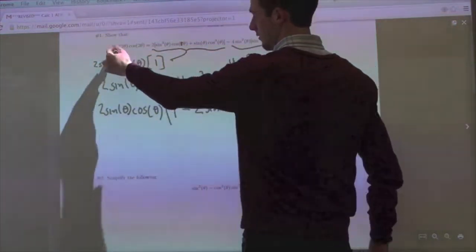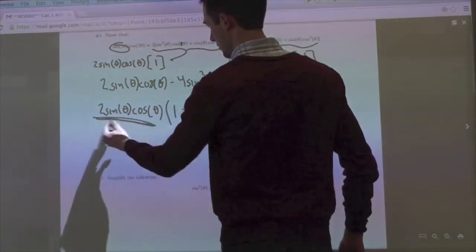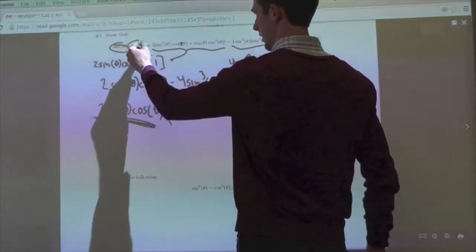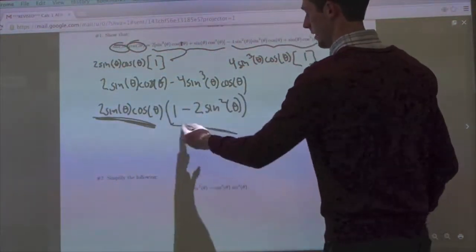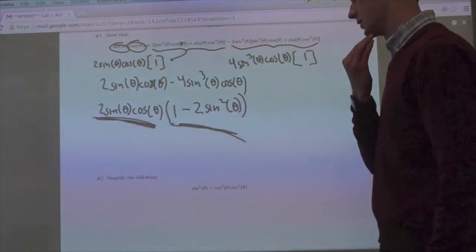And then what we see is the identity for these two right here, where sine of two theta is going to be equal to two sine theta cosine theta, and cosine of two theta is going to be equal to one minus two sine squared theta. So there's that one.